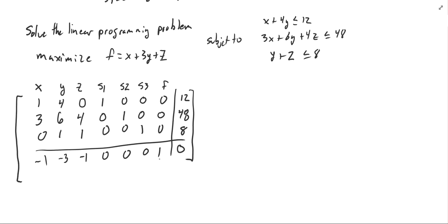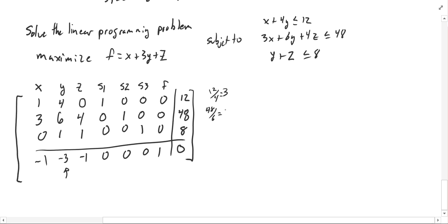My next task is to find the pivot — the column with the largest negative in the bottom row. That's the y column. I divide the right-hand side values by the y column entries: 12 divided by 4 is 3, 48 divided by 6 is 8, and 8 divided by 1 is 8. I choose the smallest, which is 3, so my pivot is that first 4 in the y column.